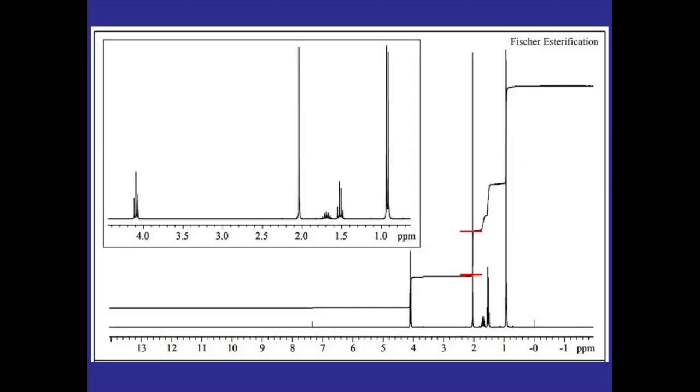If we look at that singlet and consider its integration, we can see that the integration is larger than that of the peaks around it. So this has to be the one with the integration of three, meaning that this NMR goes to the product, the isopentyl acetate.